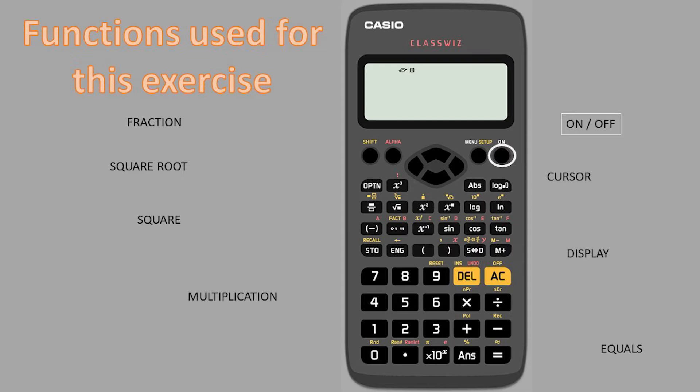This exercise is to determine the CSA of an earth conductor using the adiabatic equation method.